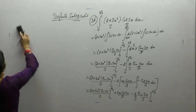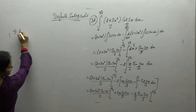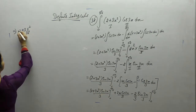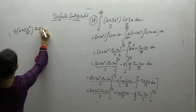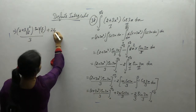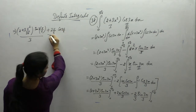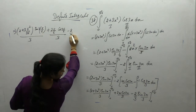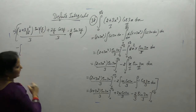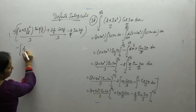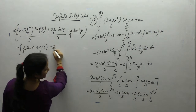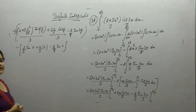Put the limits now. Upper limit: (2 + 3·(π/6)²) = π²/36, sin(3·π/6) = sin(π/2); plus 2x cos(3x)/3, minus 2/9 sin(3π/6). Lower limit: 0 — 2/3 sin(0) plus 2/3 times 0 minus 2/9 sin(0) — all terms are 0 since sin(0) = 0.